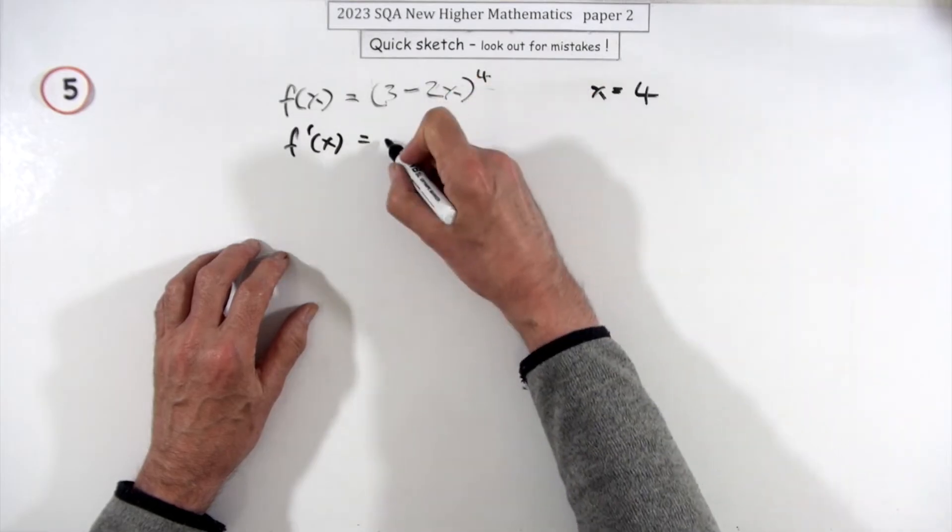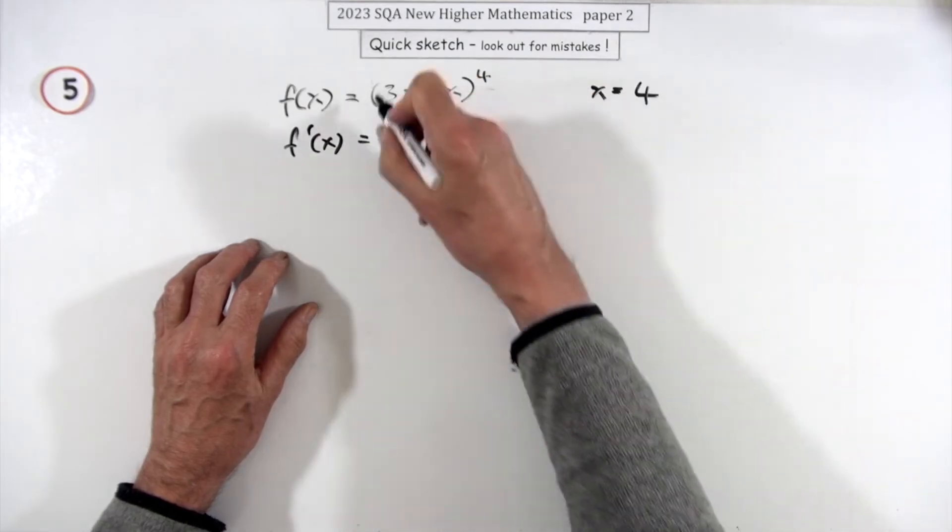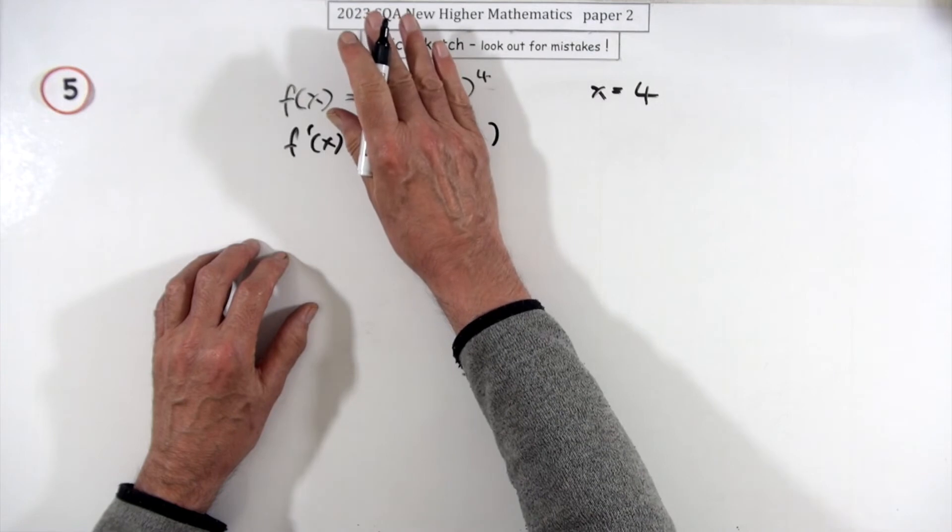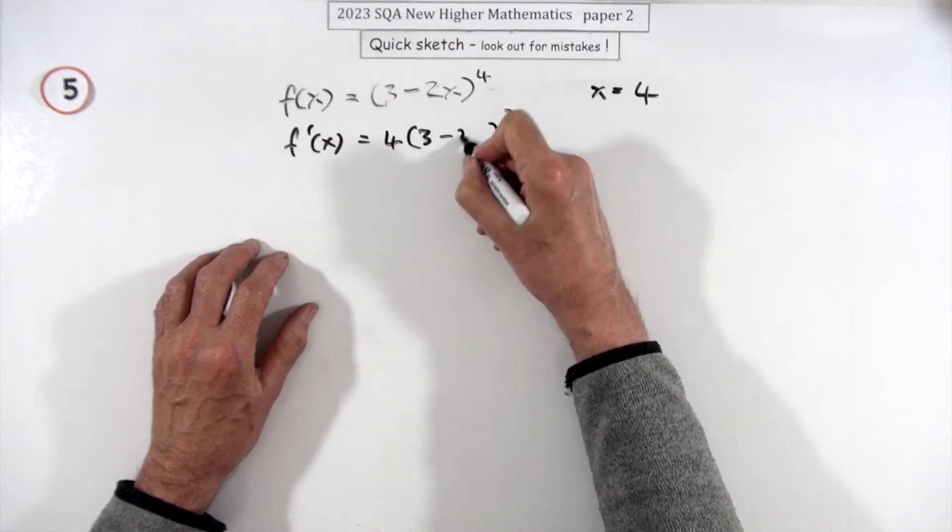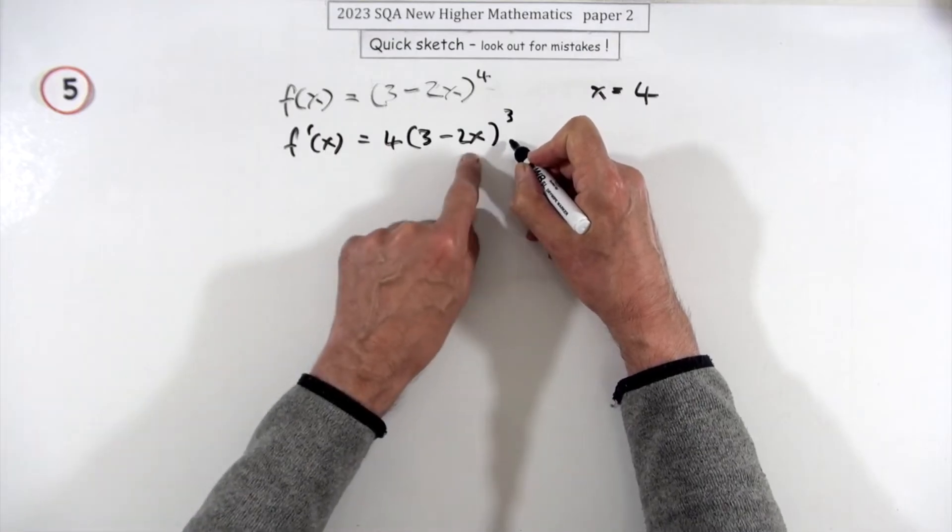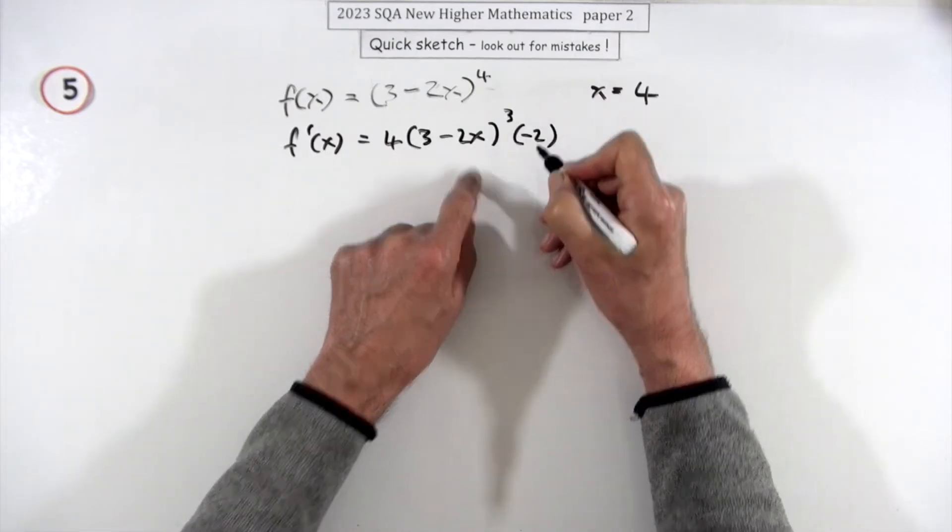So the rate of change is just the derivative, and here when you've got this function of a function you'll be using the chain rule. So do the outer one first - forget the inside. If that was just an x, it would have been 4x cubed. Then consider the inner one, multiply by its derivative which is negative two.